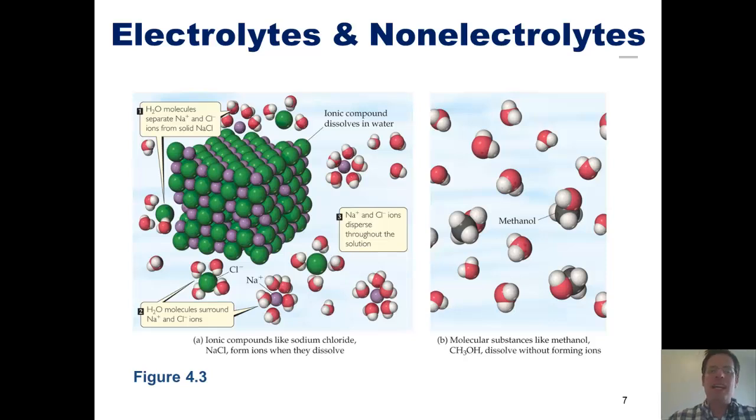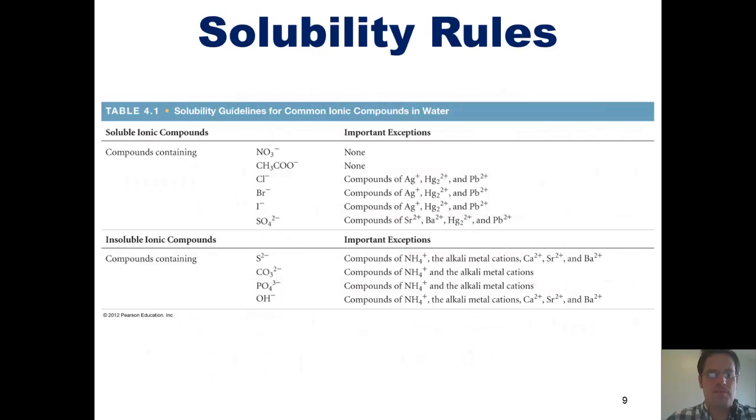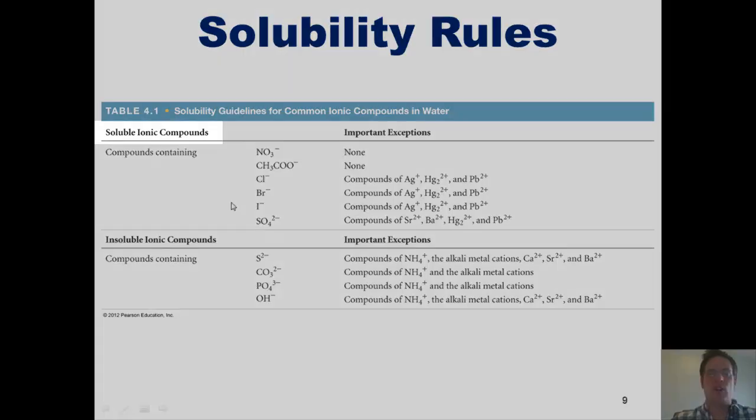Now, despite the fact that many ionic substances do dissolve in water because of water's partially negatively charged oxygen atoms and its partially positively charged hydrogen atoms, there are some ionic compounds that do not. Instead of dissolving, they just sit there undissolved in solution. We call such compounds precipitates. In order to predict which ionic compounds dissolve or are soluble in water and which ones don't or are insoluble in water, we have to use the solubility rules found in Table 4.1, which is this table right here.